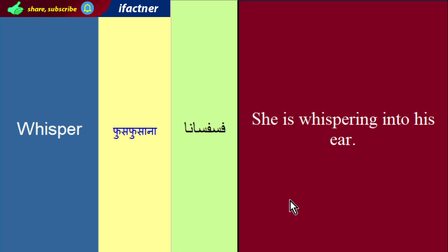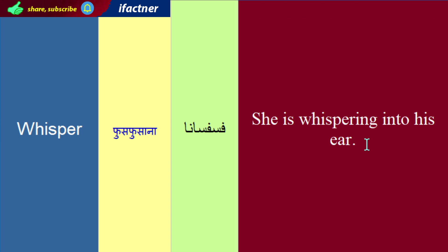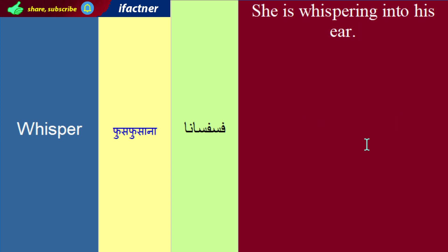Ab whisper ko use kertay huay kuchh sentences banaatay hain. Pehla sentence hai: She is whispering into his ear. Ke woh uske kaan mein fasfasa rehi hai. Woh uske kaan mein sergooshi ker rehi hai. She is whispering into his ear.